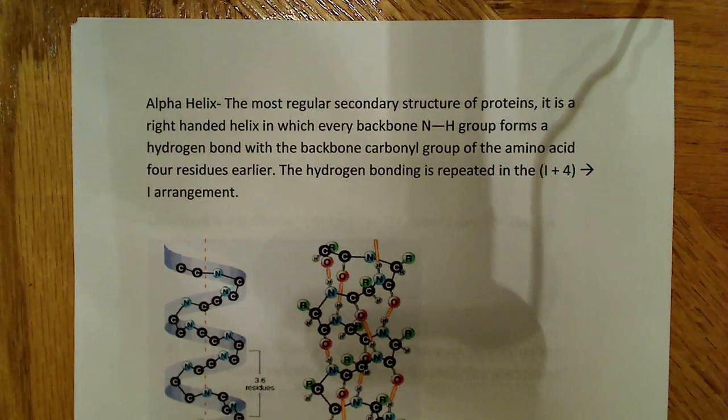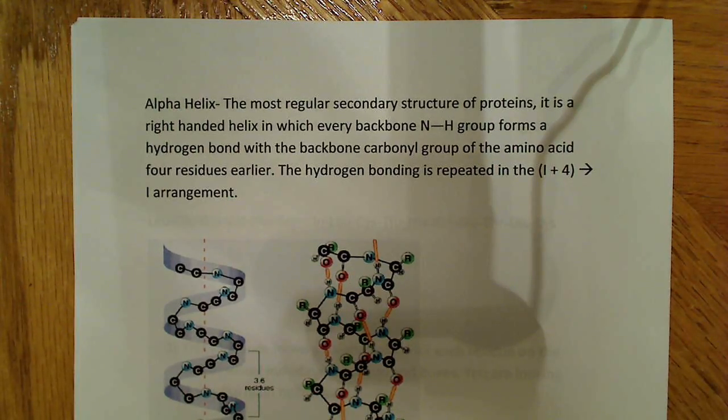So, I have a little bit of information about the alpha helix here, and it says the alpha helix is the most regular secondary structure of proteins. It is a right-handed helix in which every backbone NH group forms a hydrogen bond with the backbone carbonyl group of the amino acid, four residues earlier. The hydrogen bonding is repeated in the i+4 arrangement.